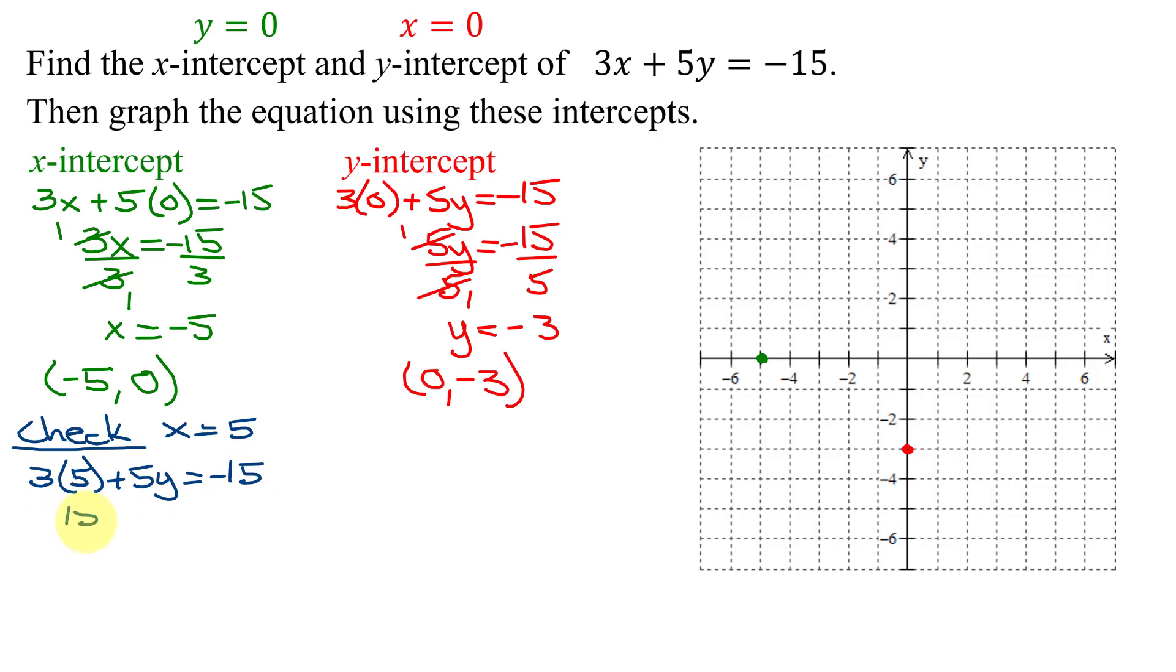3 times 5 is 15, so 15 plus 5y equals negative 15. Isolate 5y by subtracting 15 from both sides of the equation.